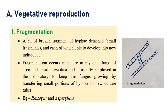In vegetative reproduction, the first method is fragmentation. The name itself indicates fragments — broken tips. The hypha is broken up into small fragments or small tips, detached from the original. Each broken or detached tip can develop into a new individual. This mechanism is observed mainly in Aspergillus as well as Rhizopus.